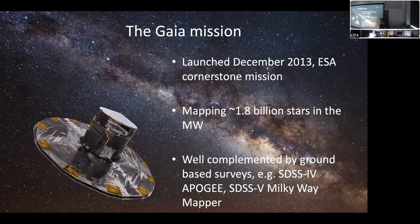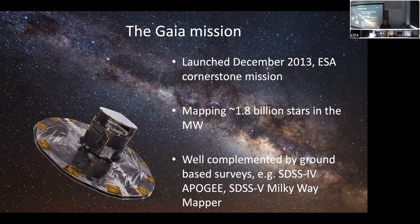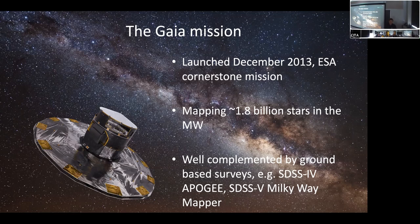A great survey we've had recently is Gaia, the main one I've been working with, launched in December 2013 as ESA's Cornerstone mission. It was originally pitched to map 1 billion stars and cost about $1 billion — one star per dollar. In the end we're doing way better: it's now observed about 1.8 billion stars. It's well complemented by ground-based surveys such as SDSS, Apogee and Milky Way Mapper, because Gaia is optical and provides mainly astrometry. Anything providing spectroscopic information — radial velocities or abundances — or infrared coverage to cut through dust helps probe other galaxy regions.